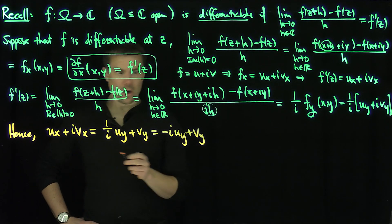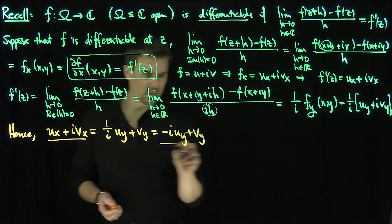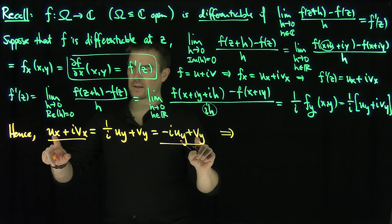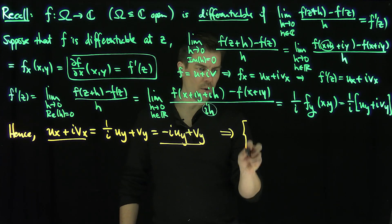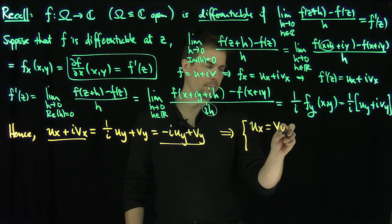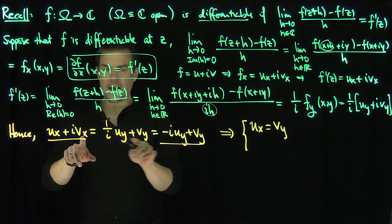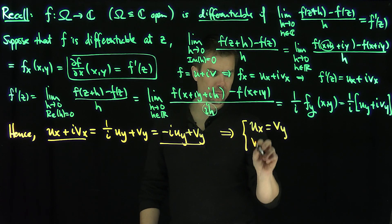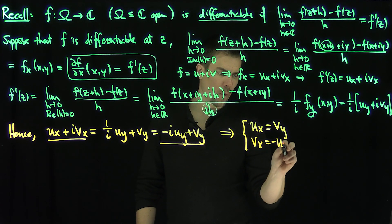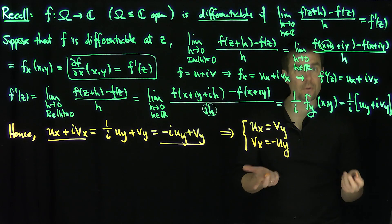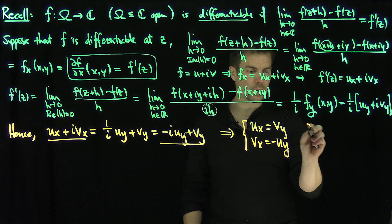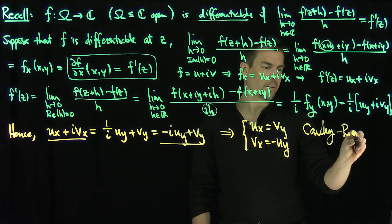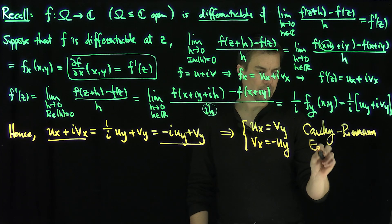Now I can equate the real and imaginary parts of these expressions. This tells me that u_x = v_y and v_x = -u_y. These two partial differential equations are the Cauchy-Riemann equations.